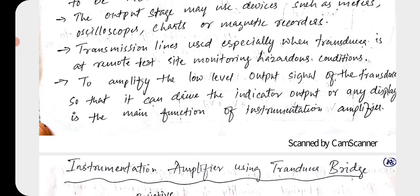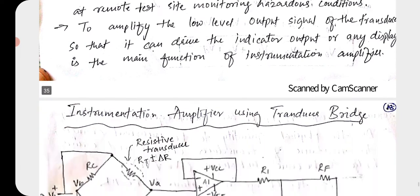Suppose we are measuring temperature. The transducer converts this physical quantity into an electrical quantity, but that electrical quantity will have a very small amplitude. That signal cannot drive your LED to display the temperature — say 26 degrees or 16 degrees — because the signal itself is very small. If we amplify this signal and give it to LED displays, then it is possible for us to see it on screen. So the low-level signal from the transducer must be amplified and given to output devices for display on digital or analog screens. This is why we require an instrumentation amplifier as an intermediate stage between input and output stage.